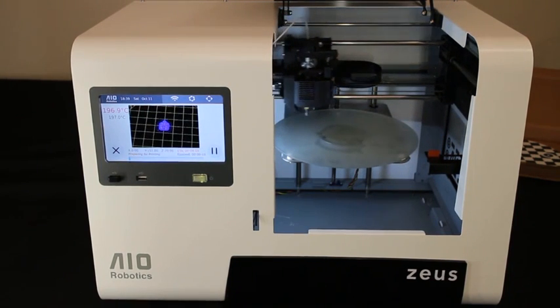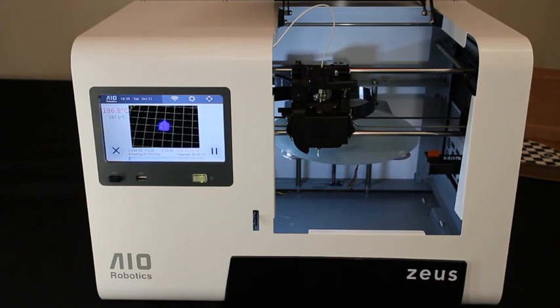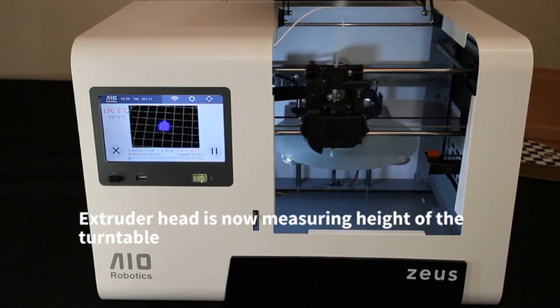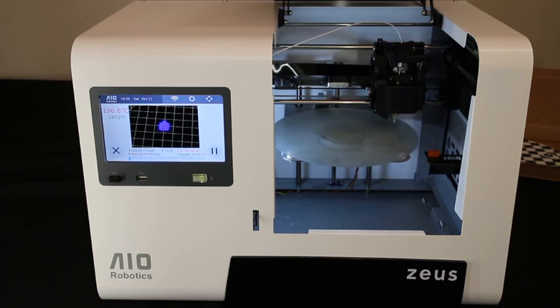As a first step, the auto-probing technique will be activated. As you can see right now in the machine, the extruder head will measure the height of the turntable and compensate for any tilts.